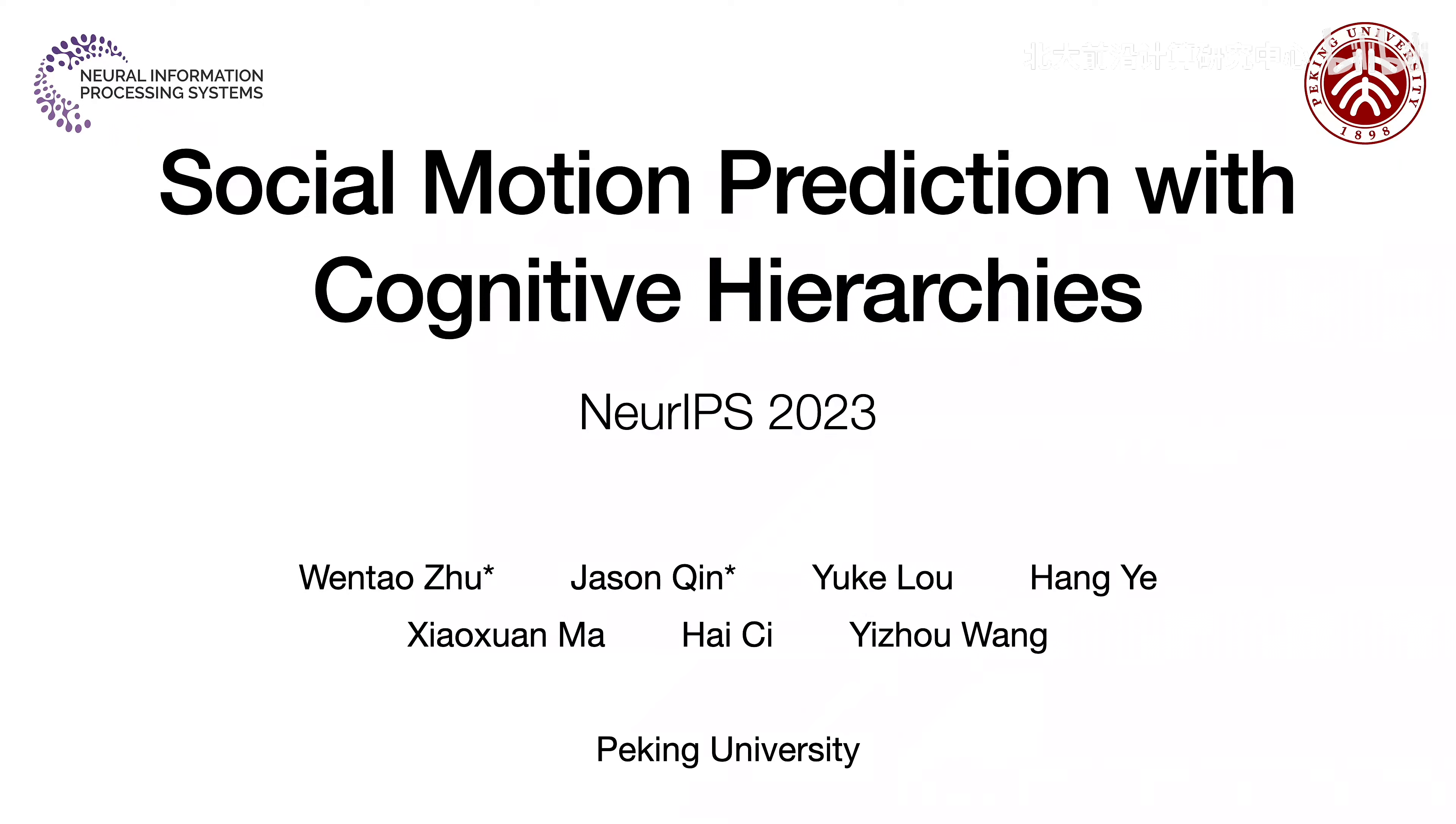In this paper, we introduce a new dataset, a novel formulation, and a cognition-inspired framework for the multiperson motion prediction problem.